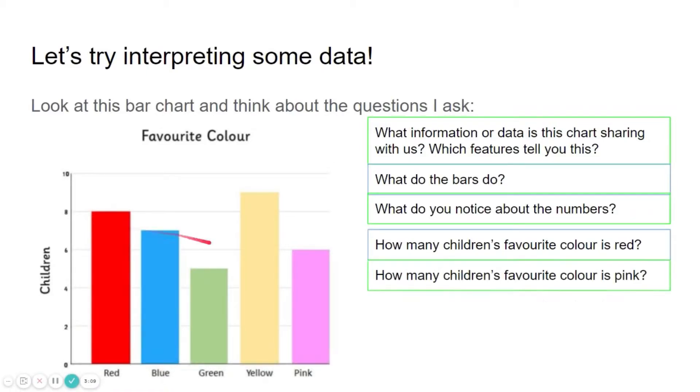How many children's favourite colour is pink? Look at the pink bar. Go to the top of the pink bar and it is in line, if you follow it along from the top to the numbers, it is in line with six. So there are six children that picked pink.